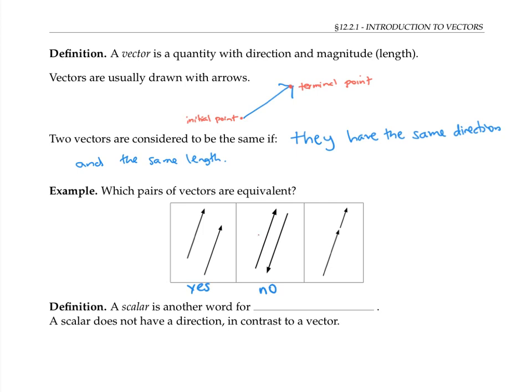If we call the first vector a — where the decorative arrow at the top represents the fact that it's a vector — then the second vector, which has the same length but points in the opposite direction, we'll call negative a. The next pair of vectors are also not equivalent: they have the same direction, but different lengths.